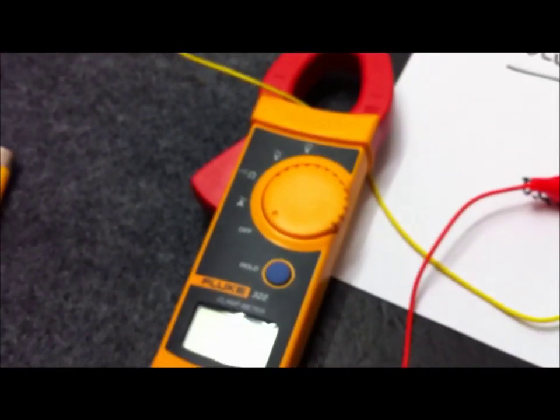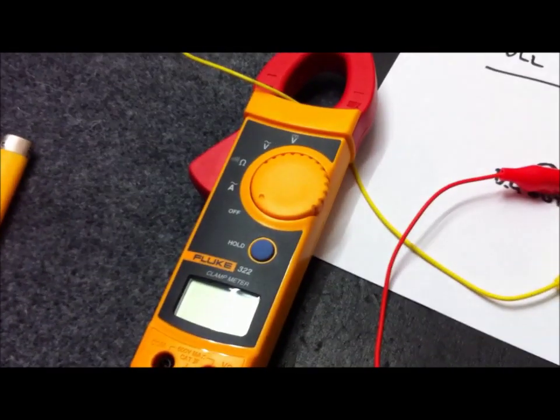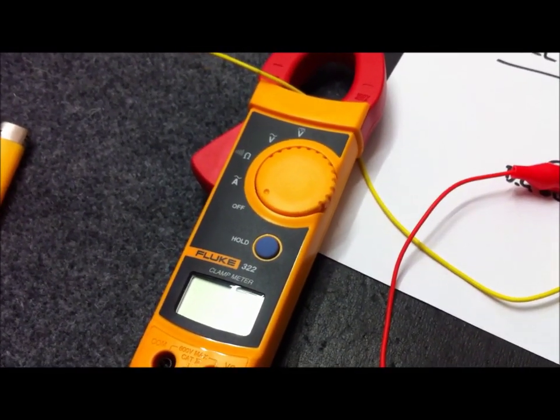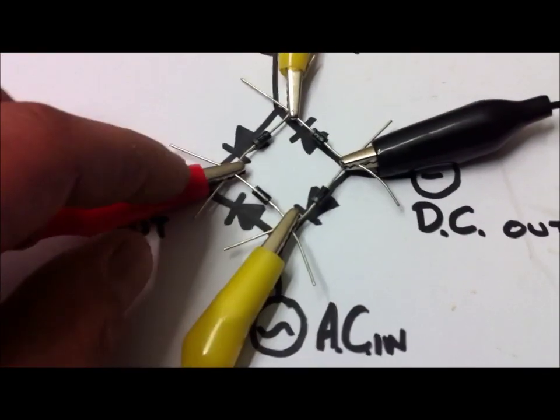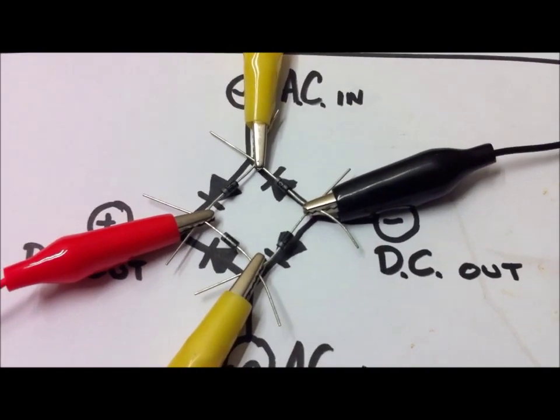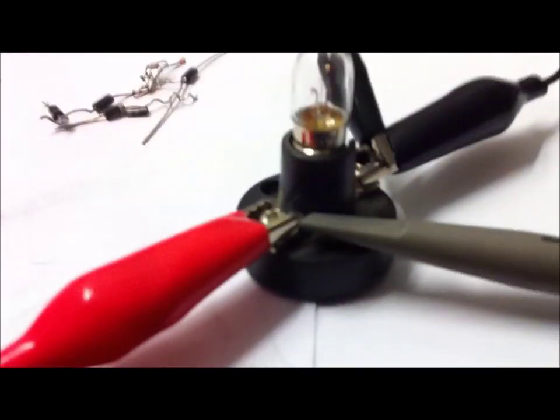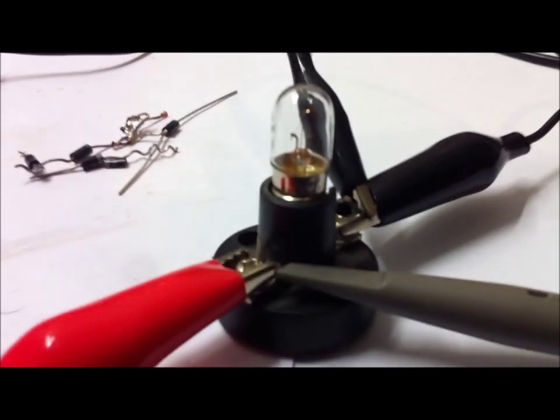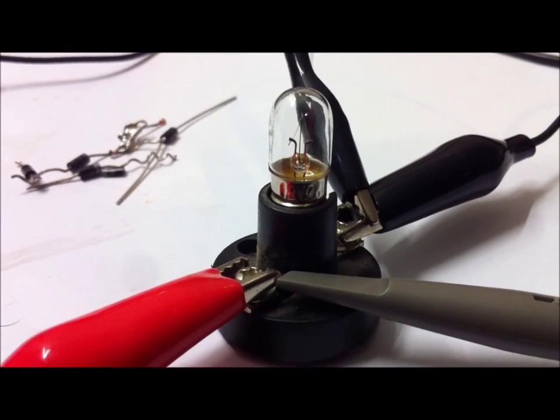We've also got the Fluke multimeter here so that we can measure the current coming into the circuit. We've got the red and the black leads coming out of the positive and negative DC output and they are going straight to our 12 volt 100 milliamp load.